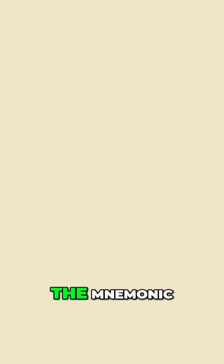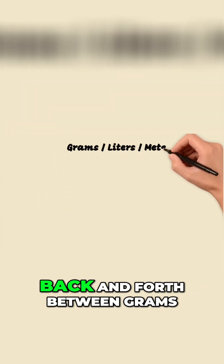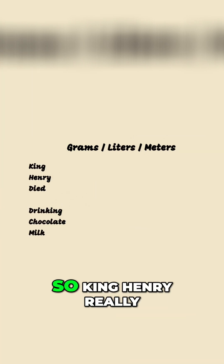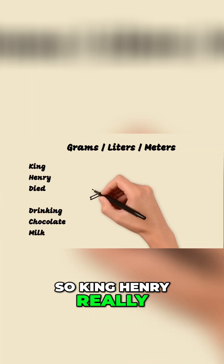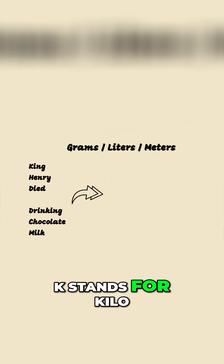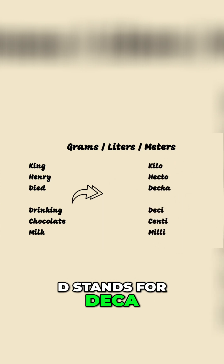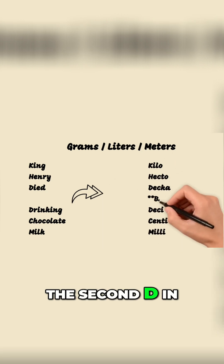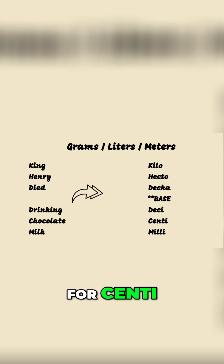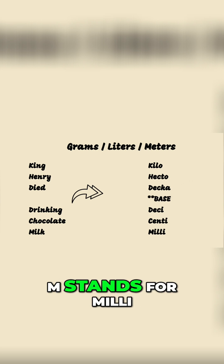So how do we put King Henry, the mnemonic, to use to convert back and forth between grams, liters, and meters? King Henry really stands for: K stands for kilo, H stands for hecto, D stands for deca, the second D in 'drinking' stands for deci, the C stands for centi, and last but not least, M stands for milli.